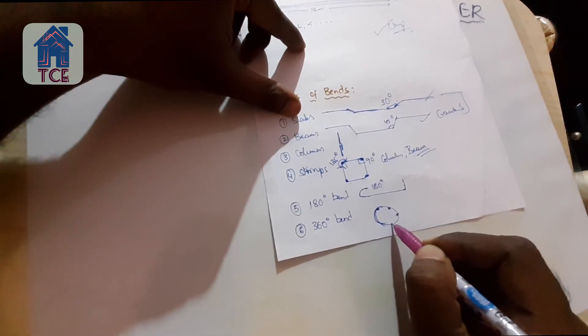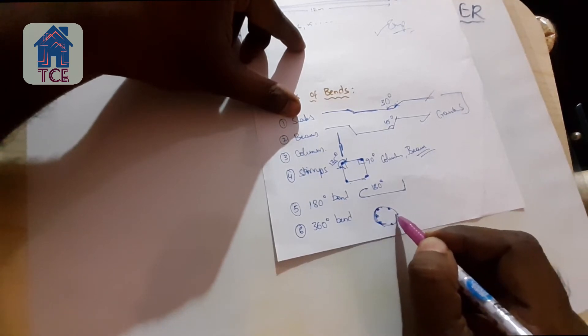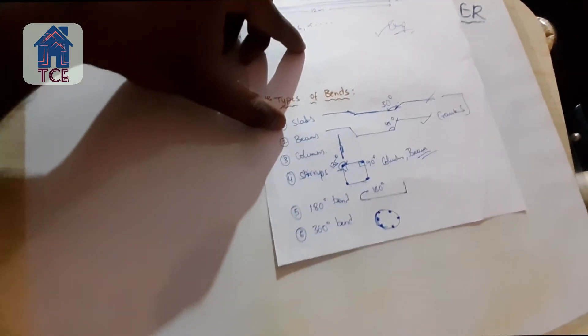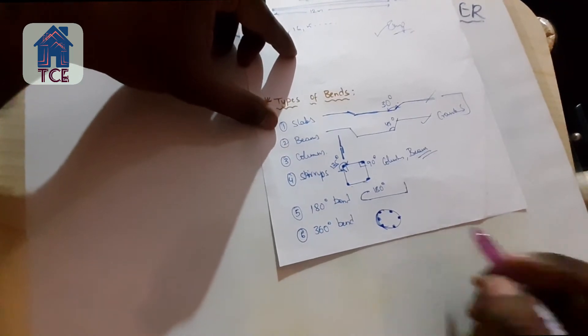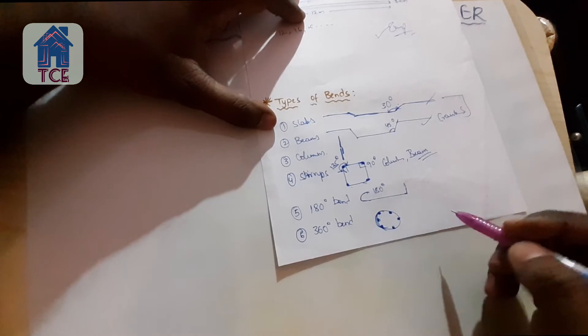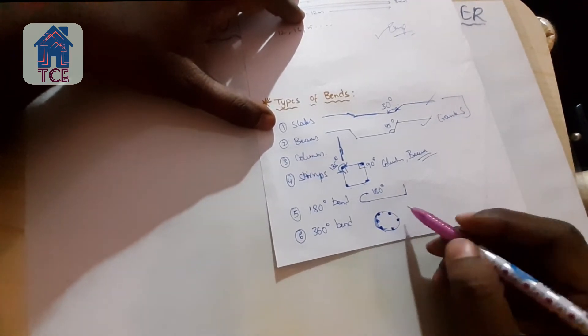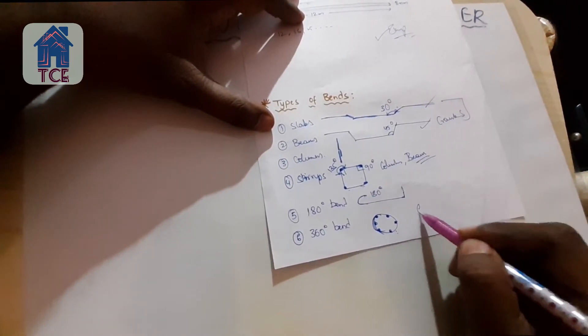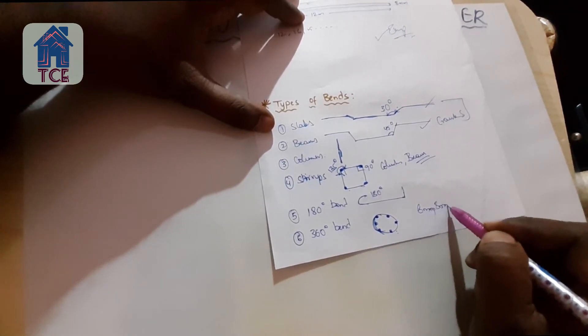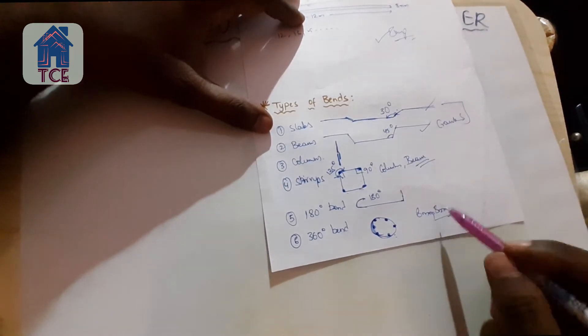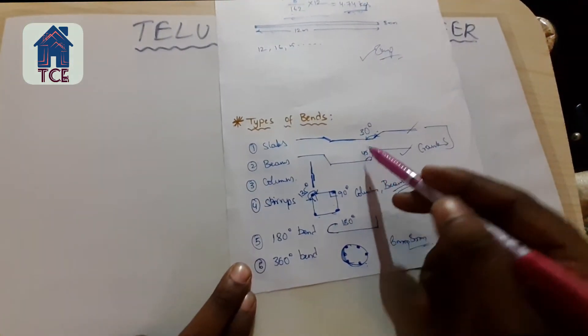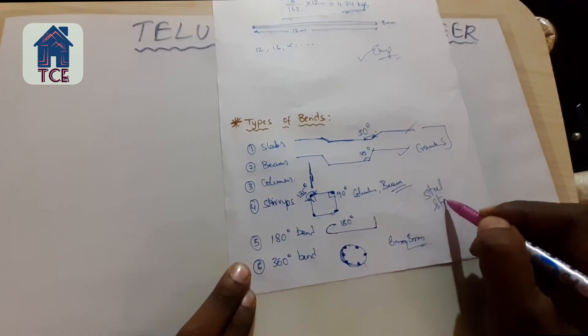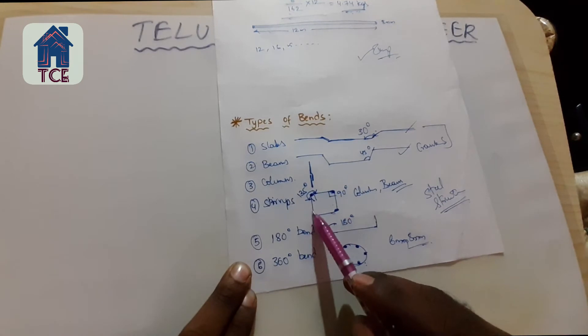And the last one is 360 degrees bend on the circular columns. We have 6 types of bends. Here are types of bends. This is a steel structure. This is a 90 degrees bend.